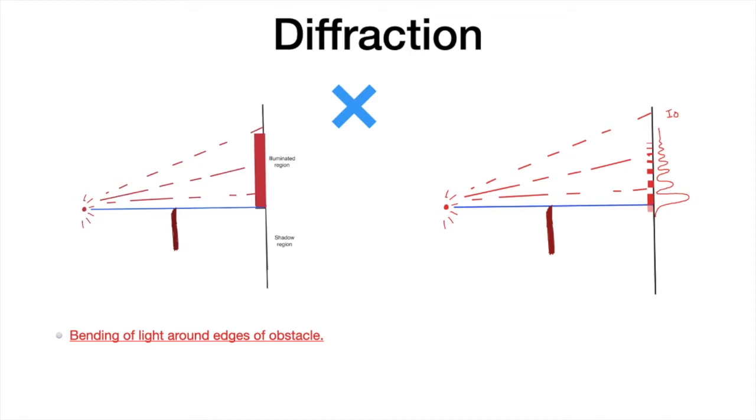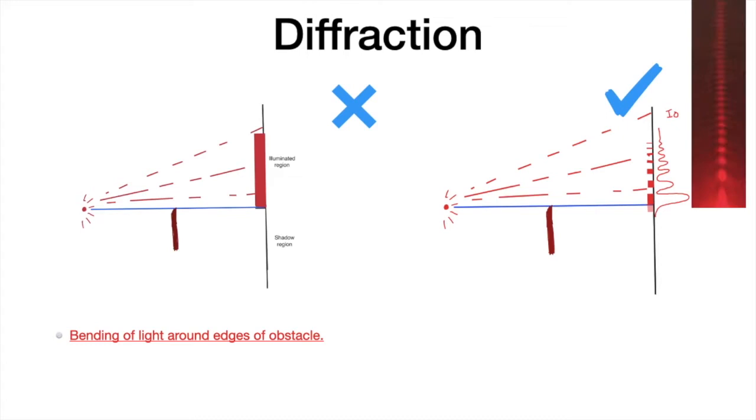And also it is noteworthy that at the line joining the center of the source to knife edge to the screen, the intensity of light is non-zero over there and it exponentially decays as we go more into the shadow region. So practically this diffraction pattern looks like this, as you can see the intensity as well as width of the maxima is decreasing as you go away from the center.